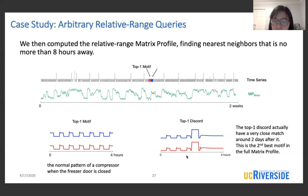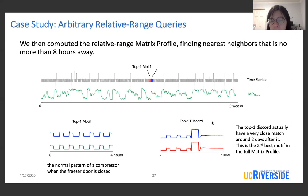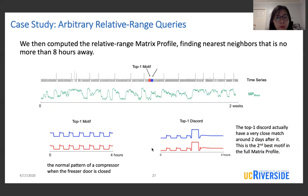This discord pattern actually looks very similar to the door-open pattern seen before. The top discord from the eight-hour relative range matrix profile has a very close match around two days after it. It is a discord because we've forbidden subsequences from finding matches more than eight hours away. This pair of patterns is actually the second-best motif in the full matrix profile. So we can see that the concept of motif and discord depends greatly on the range being explored. The STMP algorithm allows us to discover motifs and discords corresponding to arbitrary ranges very efficiently.